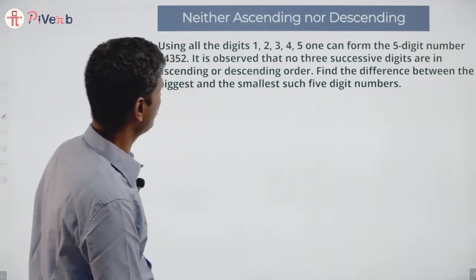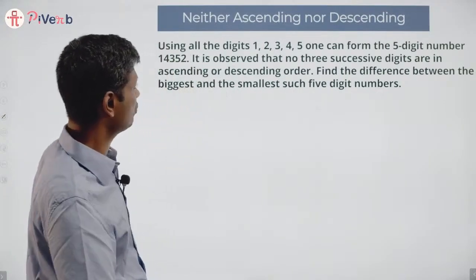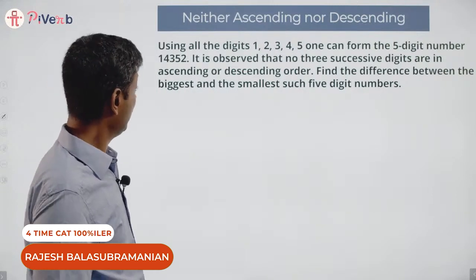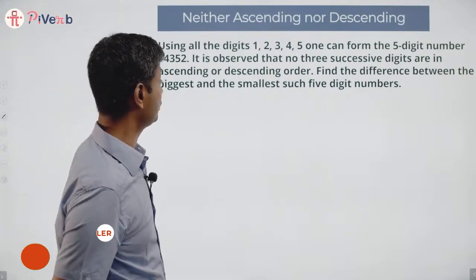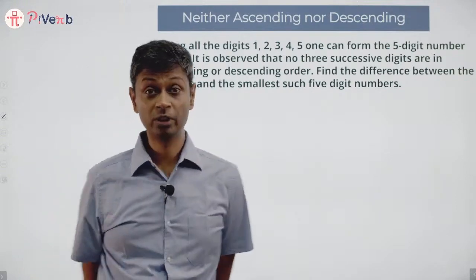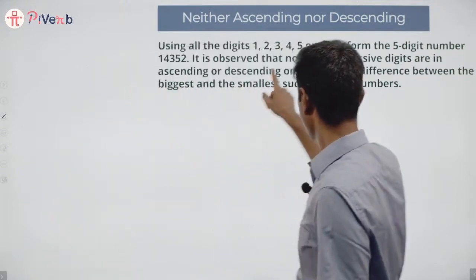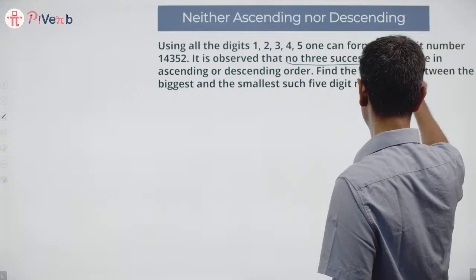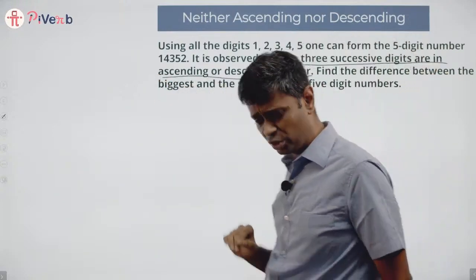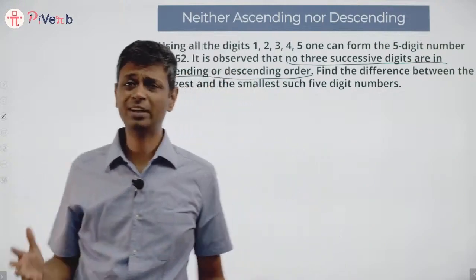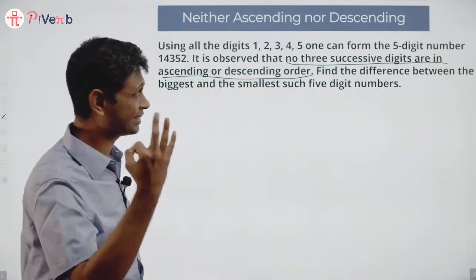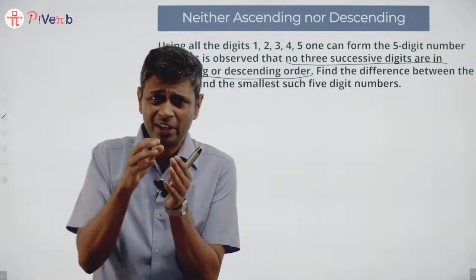Using all the digits 1, 2, 3, 4, 5, one can form the five-digit number 14352. It is observed that no three successive digits are in ascending or descending order. This is a very brilliant condition — sometimes these questions are hard to understand, but once you do, they become very easy.